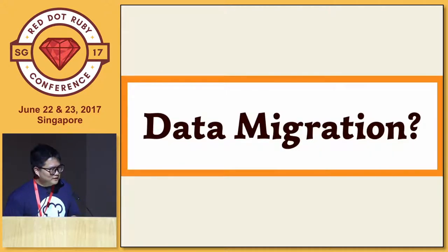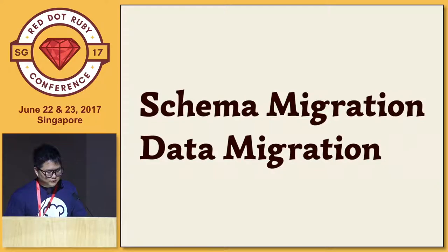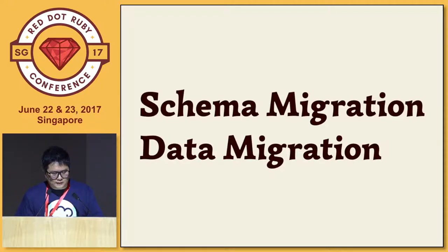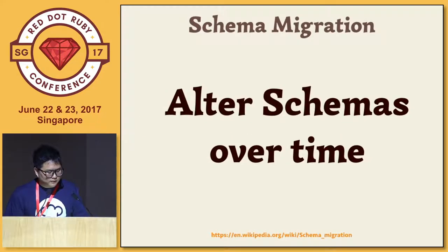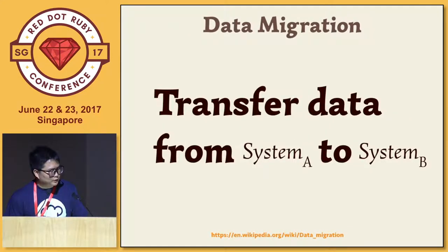Today I'm here to talk about data migration. In Rails, we do schema migration. Data migration is different — with schema migration you change the database schemas over time, while data migration is when you translate data from system A to system B.